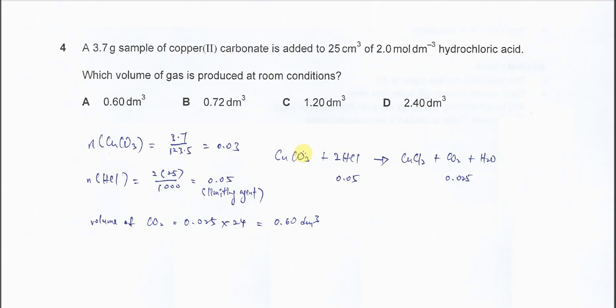Question 4. 3.7 grams of copper carbonate is added to 25 cm³ of 2 mol per dm³ HCl. Which volume of gas is produced at room conditions?